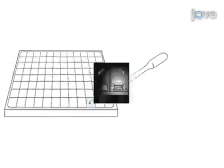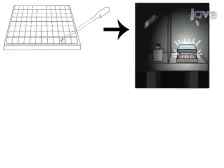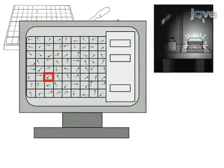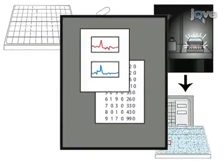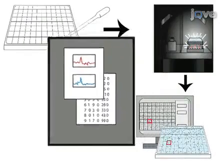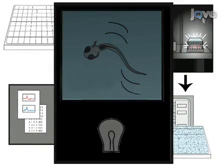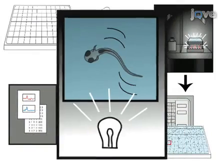We align the video tracking software with the plate and then track the motor response of the fish following transitions from light to dark or dark to light, which is what we call the VMR.